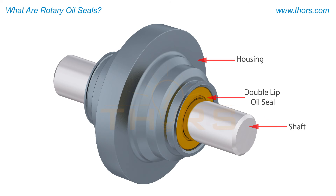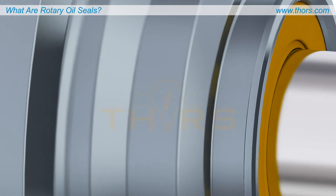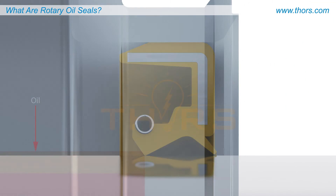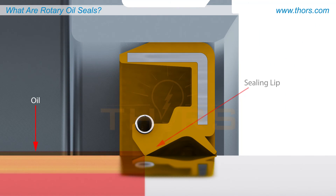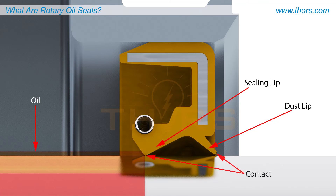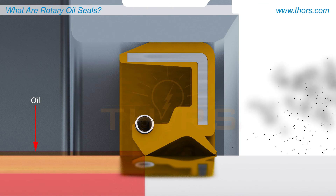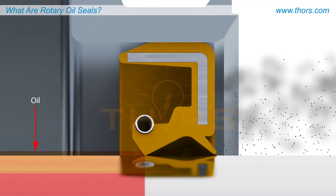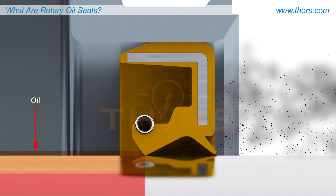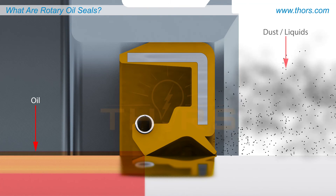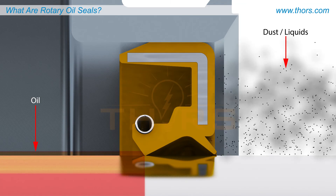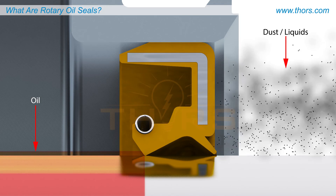Here is an example of a double lip oil seal fixed into a housing and onto a shaft. In profile view, it can be seen that both the sealing lip and dust lip make direct contact with the shaft. While the sealing lip keeps oil inside the housing, the dust lip prevents unwanted dust, liquids, and other particles from entering.